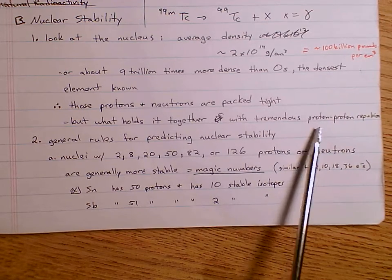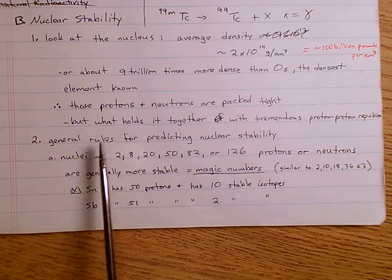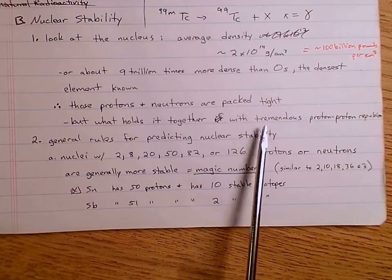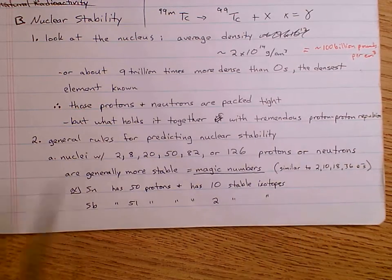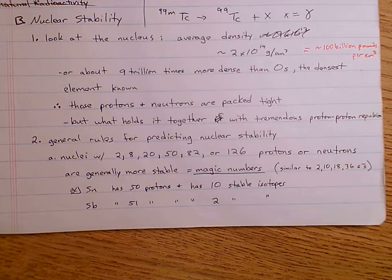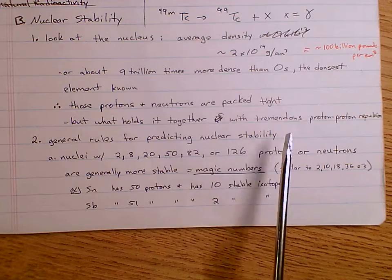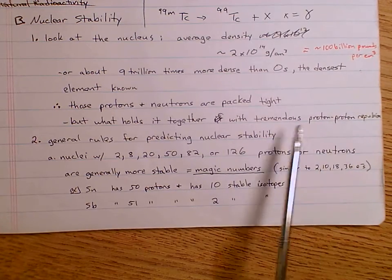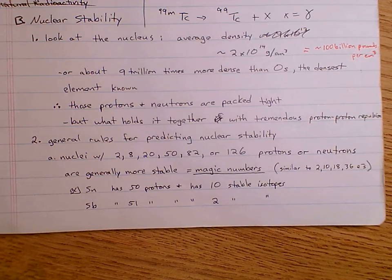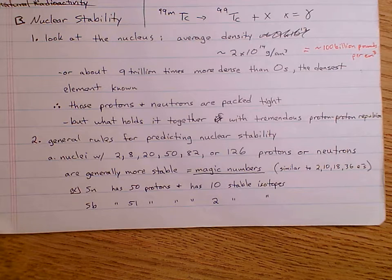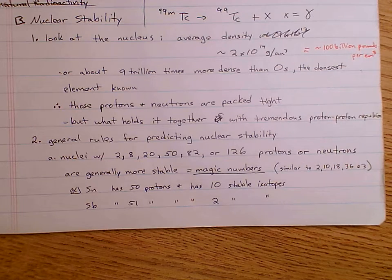Protons repel other protons. What is holding this nucleus together when you have such tremendous proton-proton repulsions? The answer is what's known as the strong nuclear force. However, that's a lot of repulsion, and so any nucleus that's not very stable will go through nuclear reactions to try to become more stable and ease some of these proton-proton repulsions.